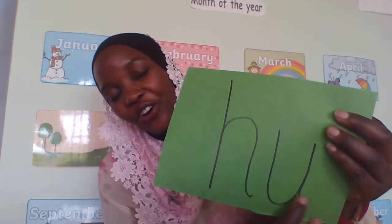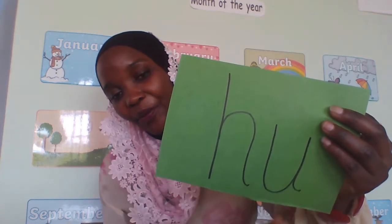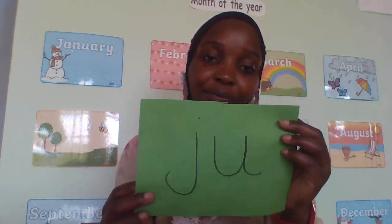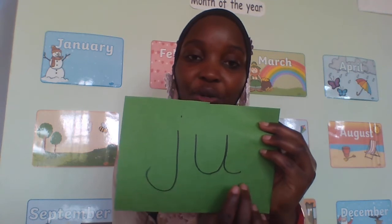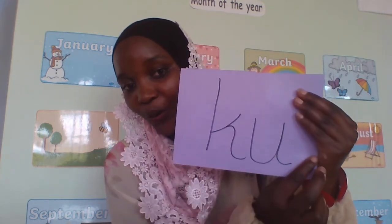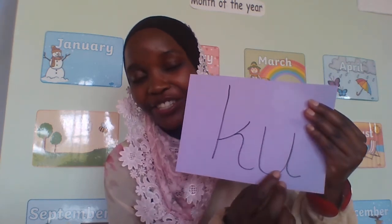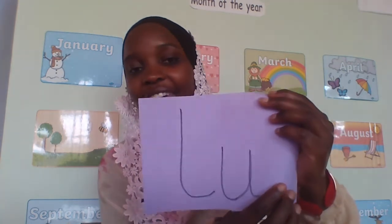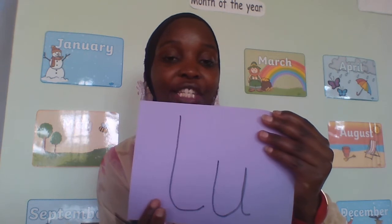Can we read it? 'Huu'. Zion — 'Huu'. Bridget, read — 'Huu'. Gabriel — 'Huu'. How about this one? 'Juu'. Again, 'Juu'. Good job. How about this one? 'Ku'. Again — 'Ku'. Good job, Gabriel. How about this one? 'Luu'. Again, 'Luu'. Again, children — 'Luu'.